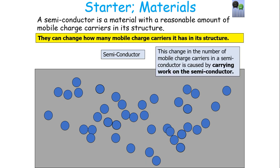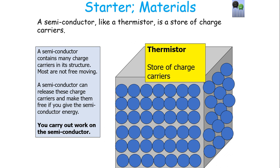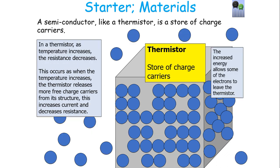You can change how many mobile charge carriers you have in a semiconductor by carrying out work on it. Take a thermistor as an example: fundamentally, a thermistor is a store of charge carriers. In many semiconductors, there are lots of charge carriers, but most are not mobile. A semiconductor can release these charge carriers and make them mobile if you give them energy. In a thermistor, when you increase the temperature, thermal energy is placed into the thermistor, giving the charge carriers more energy and releasing some to become free mobile charge carriers, which increases the current and decreases the resistance and resistivity.